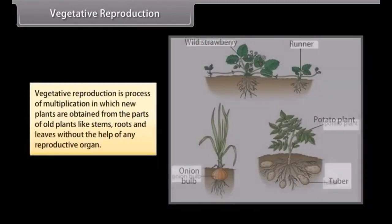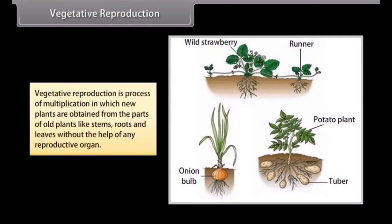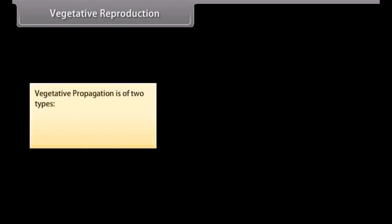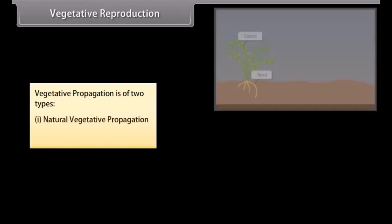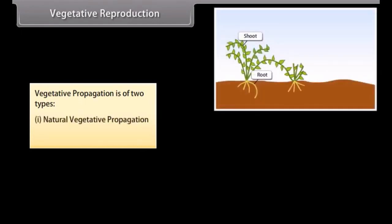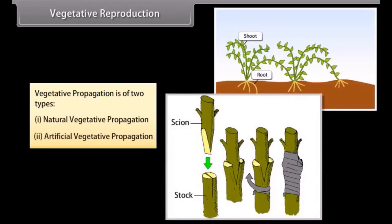Vegetative reproduction is the process of multiplication in which new plants are obtained from the parts of old plants, like stems, roots, and leaves, without the help of any reproductive organ. Vegetative propagation is of two types: natural vegetative propagation and artificial vegetative propagation.